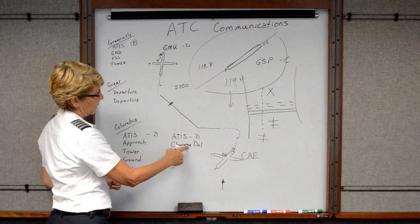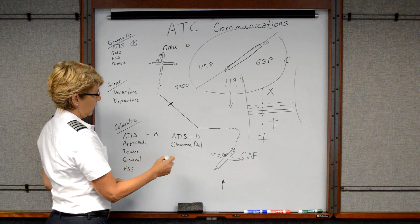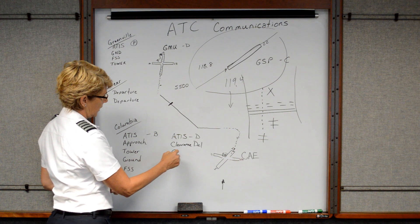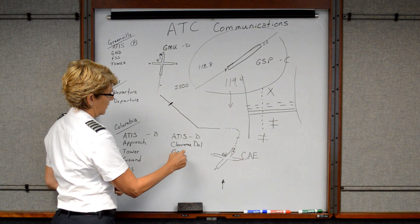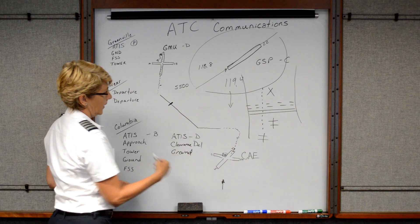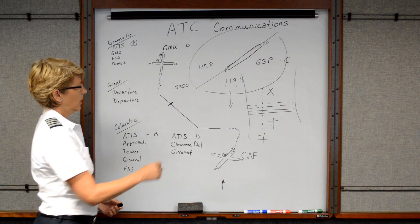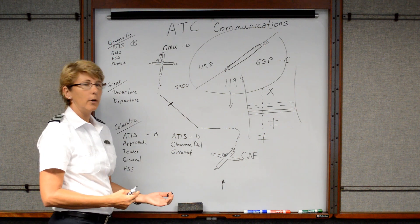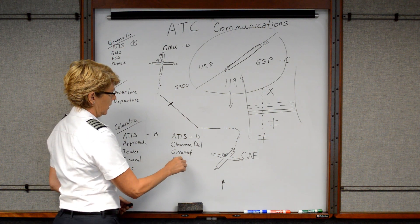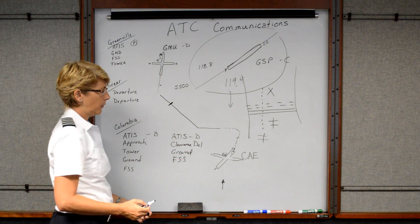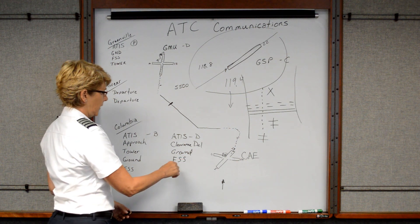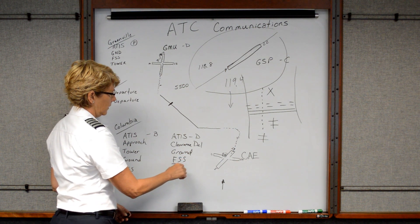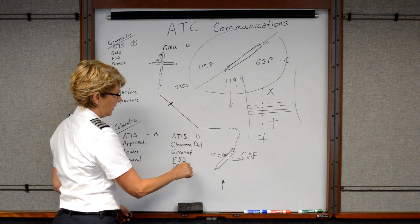Okay? So once we have the information from the clearance delivery frequency, now we're ready to taxi. So then we would call ground and ask for our taxi instructions. We taxi out, we end up at the hold short line, we've done our engine run up, and now we want to call the flight service station to open or activate our VFR flight plan. Then we're ready to call tower and tell them we're ready to take off.